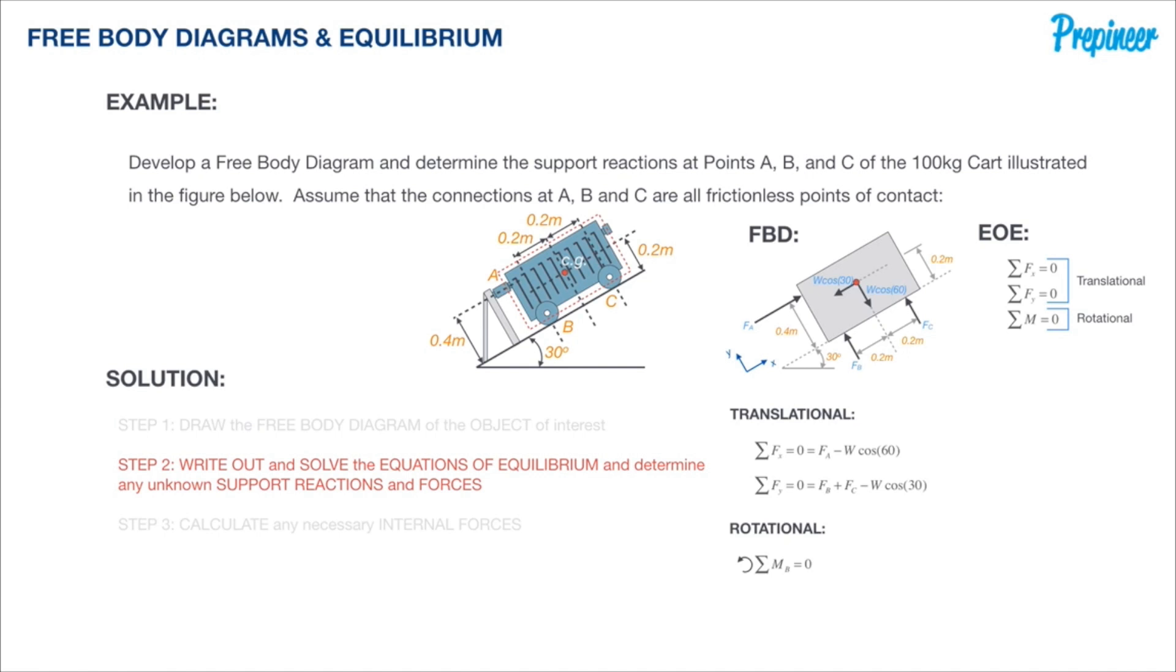Doing the same as we did with the translational equations, we identify and gather all the forces that create a moment about point B. F sub A, the self-weight, and F sub C are creating some moment about point B. Now we have all of our equations defined—three equations, three unknowns—so we have everything we need to actually solve for the unknown reactions.